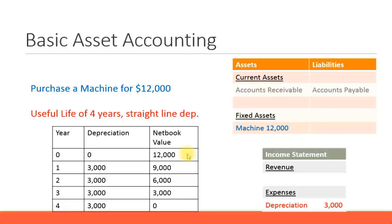Asset accounting is an important module in SAP Financial Accounting. It's one of the four components: general ledger, accounts receivable, accounts payable, banking ledger, and asset accounting. Along this presentation and the next few presentations, we'll discuss more about the organizational units in asset accounting, the asset classes, the depreciation areas, the chart of depreciation, and how all the different types of asset transactions can be posted in SAP Financial Accounting.